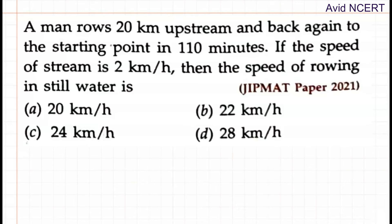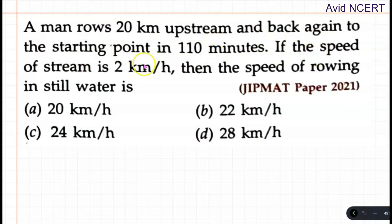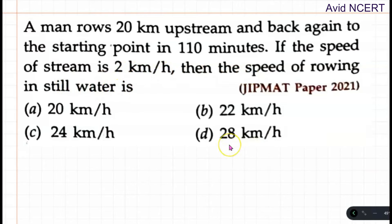Hello viewers, welcome to my channel. This is Geeta. Today we'll be solving a question from JIPMAT 2021 question paper. A man rows 20 kilometers upstream and back again to the starting point in 110 minutes. If the speed of the stream is 2 kilometers per hour, then what is the speed of rowing in still water?